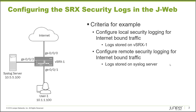Let's jump right to the example. Looking at the topology on the left, we have User1 which connects into VSRX1 on GigE0/0/1, using the 10.1.1.100 IP address. Then we have the syslog server connecting in on VSRX1 on GigE0/0/2, using the 10.5.5.100 IP address. And then we have the internet connection on GigE0/0/0 for VSRX1.